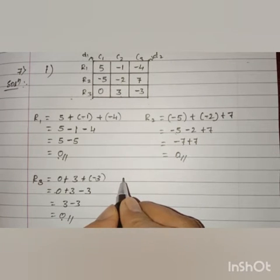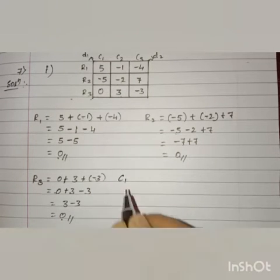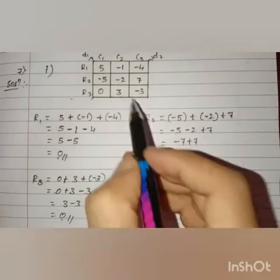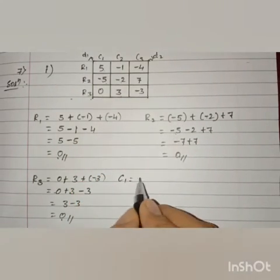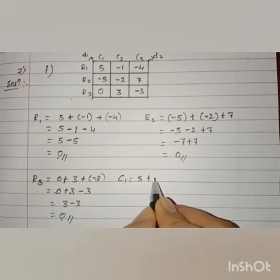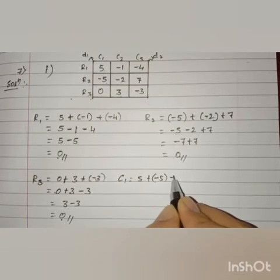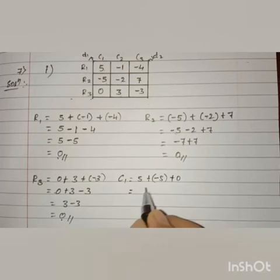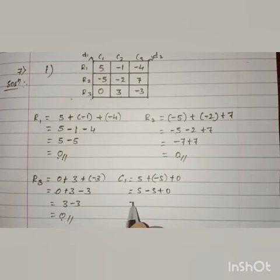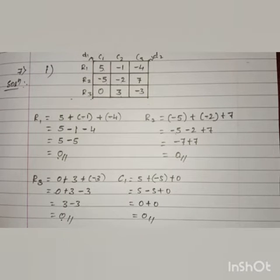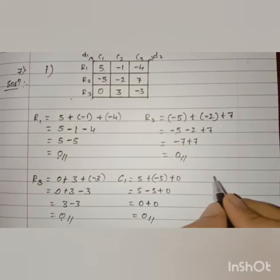Now let us find out the columns. Column 1: we have 5, minus 5, and 0. So 5 plus minus 5 plus 0. That is 5 minus 5 is 0, and 0 plus 0 is 0. So column 1 also gives us 0.